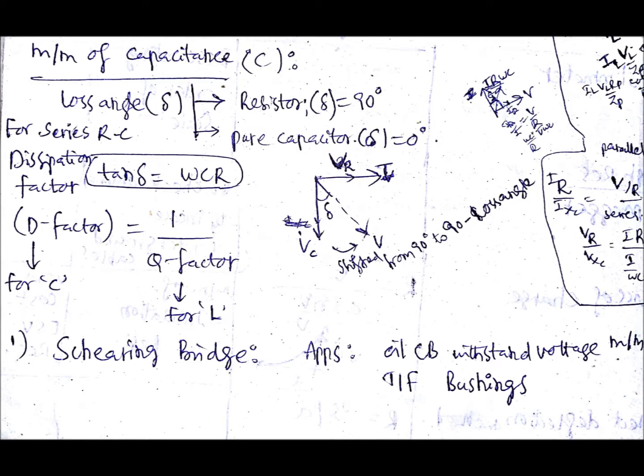Then coming to the measurement of capacitance. Here we have one important term, that is loss angle. This loss angle is coming because of the resistor. For a resistor, the loss angle will be delta equals 90 degrees. For a pure capacitor, loss angle will be 0 degrees. If you observe the phasor diagram that I have mentioned, you can get that. For a series RC circuit, that phasor diagram is for series RC circuit.